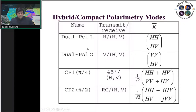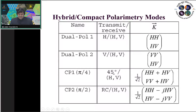In CP1 mode with π/4 phase difference, CP1H = HH + HV and CP1V = VV + HV. With dual-pole data, one can derive quad-pole properties of SAR data while covering a larger swath. In CP2 mode with π/2 phase difference (right circular transmitted), RH = HH - j·HV and RV = HV - j·VV. This work demonstrated the potential of hybrid polarimetry before the launch of RISAT-1. Volume scattering from compact polarimetry is always less than from fully polarimetric SAR data, as shown across most locations in the comparison graph.